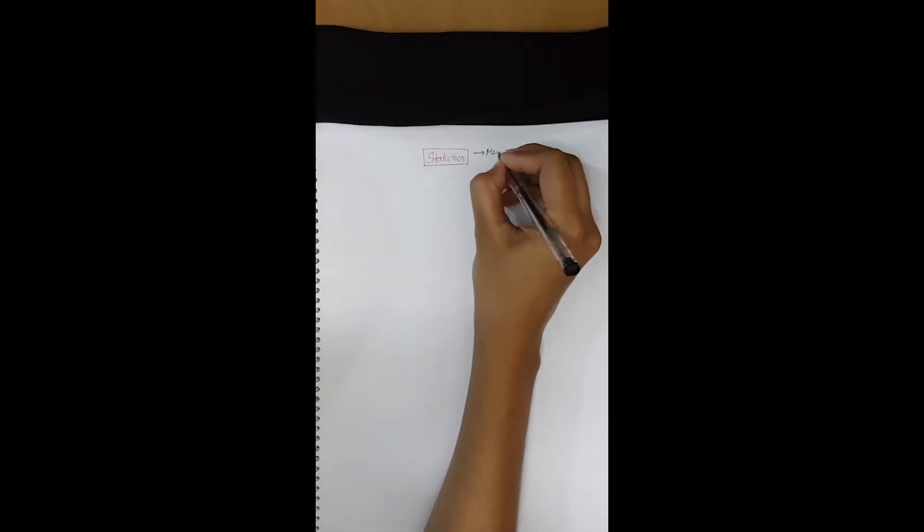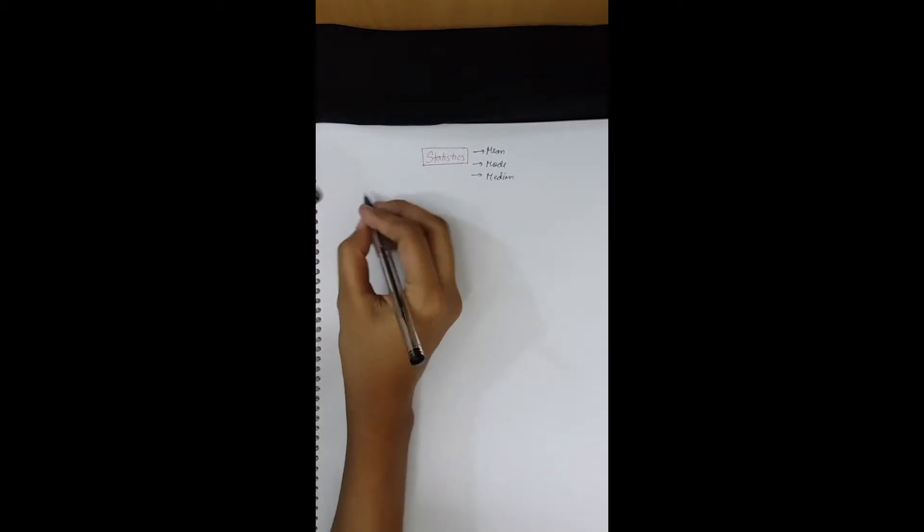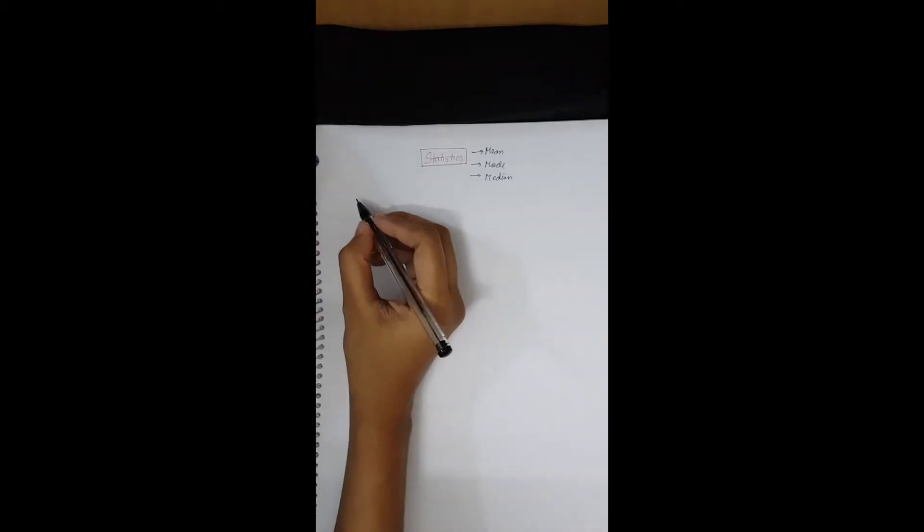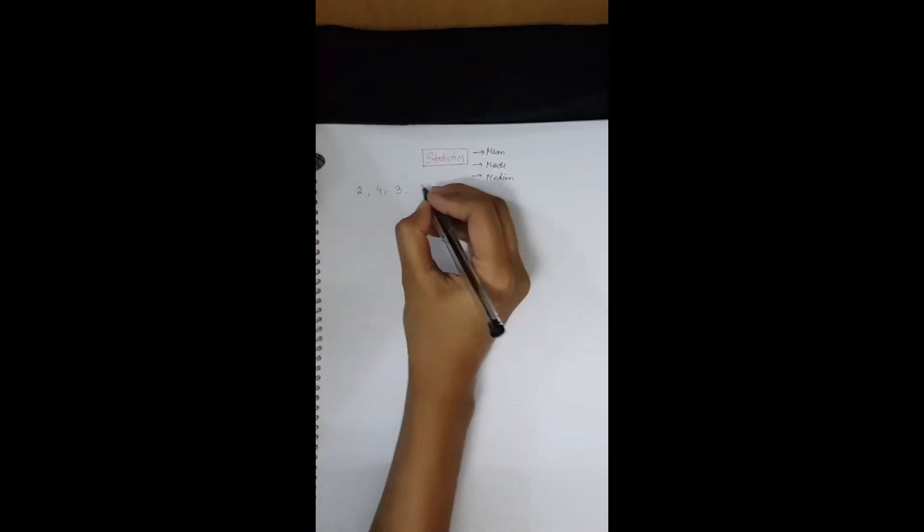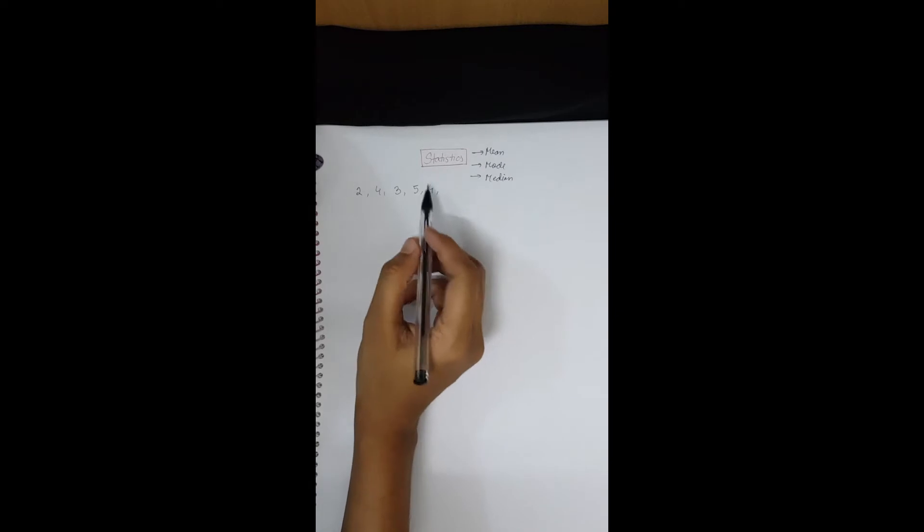In this video, I will review some selected topics from the chapter on statistics. We will see the procedure of finding mean, mode, and median. Suppose there are five students and the marks they have obtained out of 10 are listed below: 2, 4, 3, 5, 4. So these are the marks they have got out of 10.